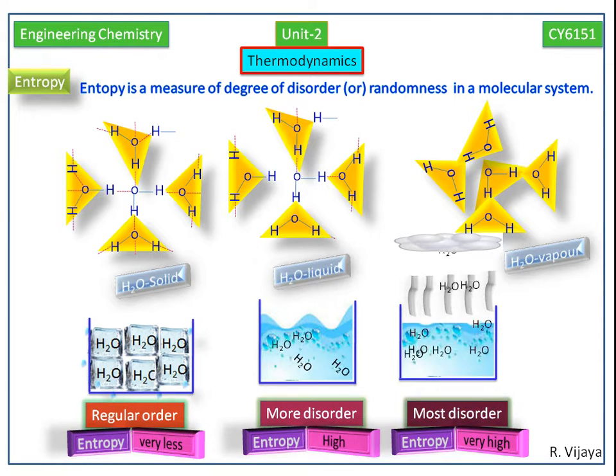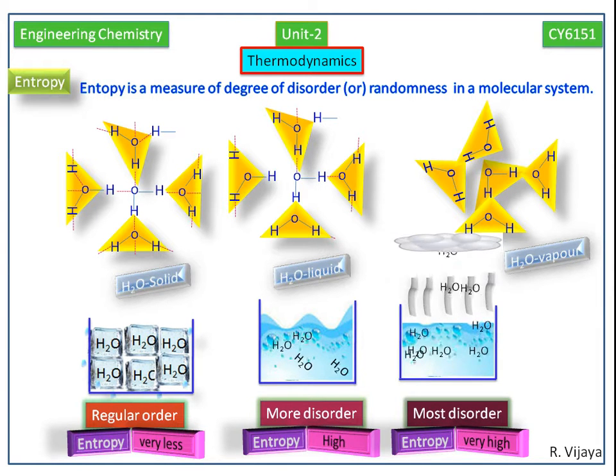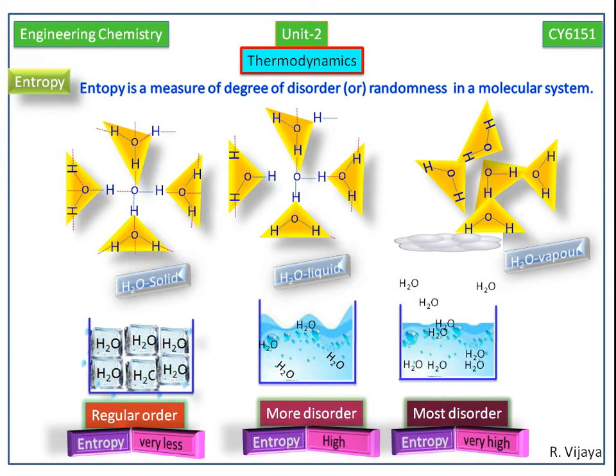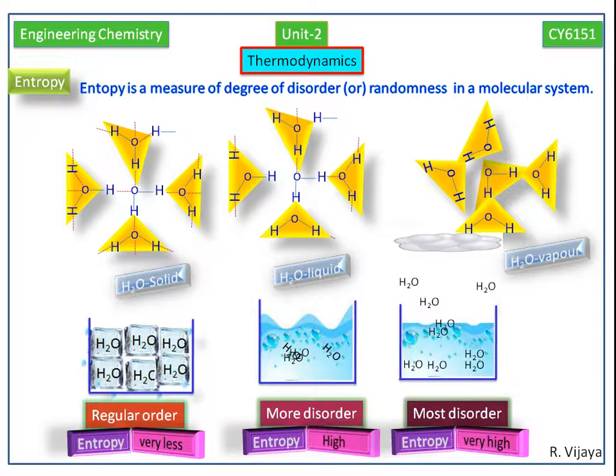Not only in the water case, every molecule in solid state has very low entropy. In liquid state, it is high. In vapor phase, it is very high. Once again, entropy is a measure of degree of disorder or randomness in a molecular system. Thank you.